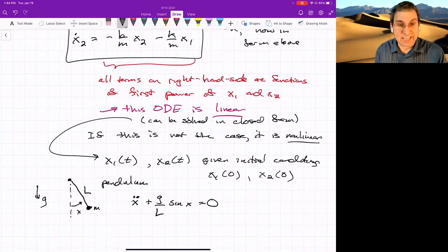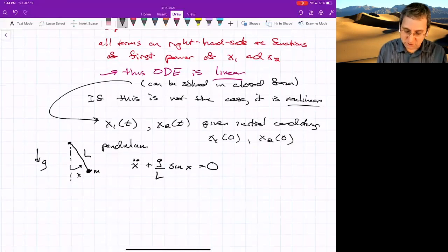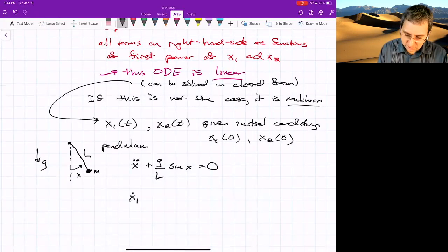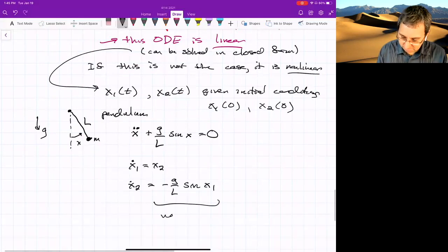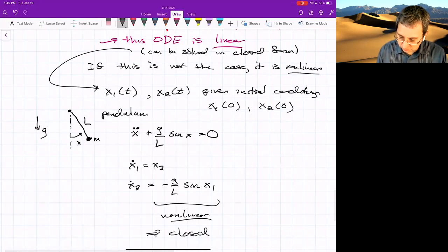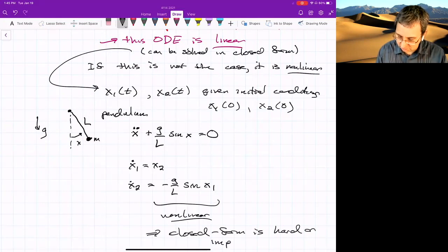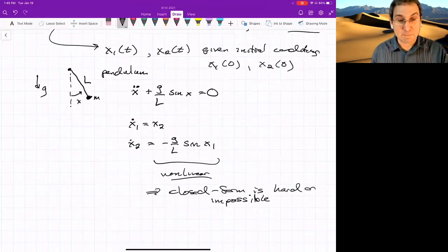Right now, it's not terribly important how we get this. Just sort of take it on faith. This is the equation of motion for the pendulum. So if we use the same approach as we did above, we would get x1 dot equals x2, x2 dot equals negative g over L sine x1. So this is non-linear, which means closed form solution is hard or impossible. For the pendulum, it's just hard. It's not impossible. But for systems of higher dimension, it becomes impossible.